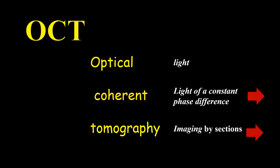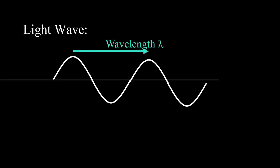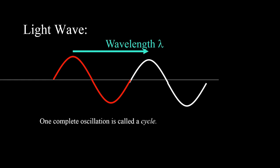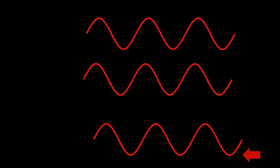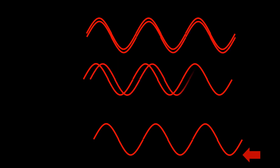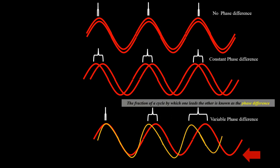We know that light travels as a wave; the distance between peaks is the wavelength. One complete oscillation is called a cycle, and any portion of the cycle is called a phase. The fraction of a cycle by which one wave leads the other is known as the phase difference.